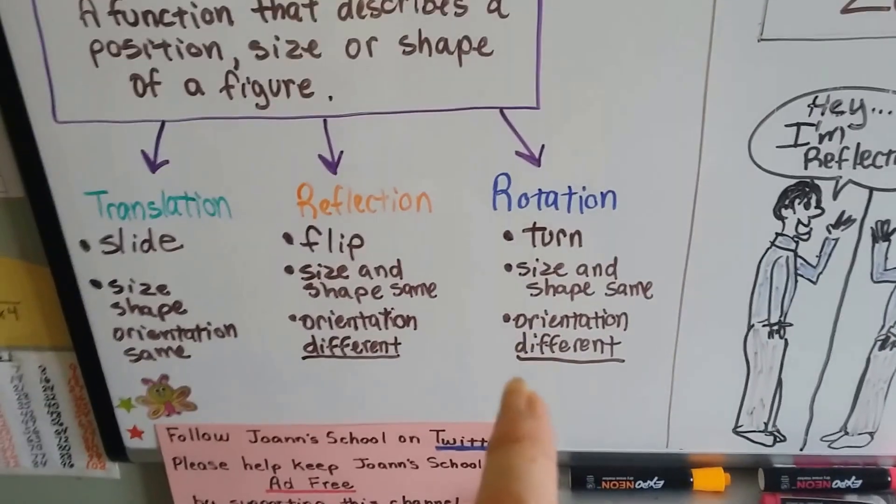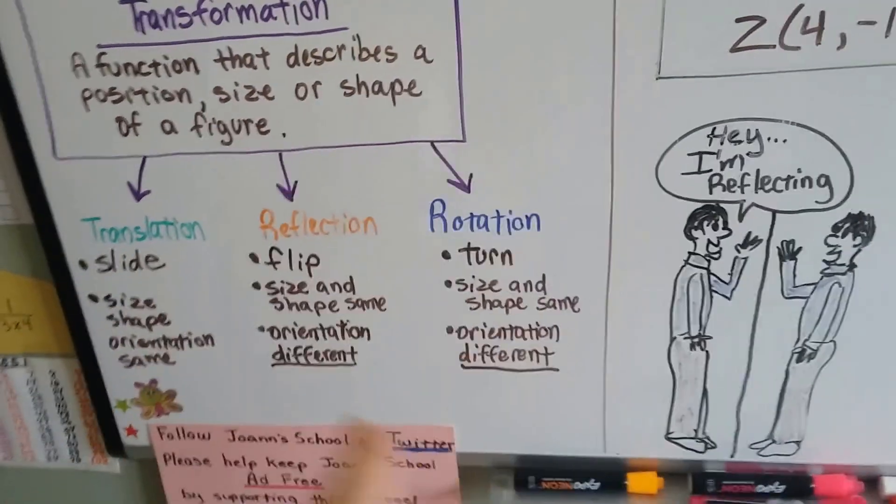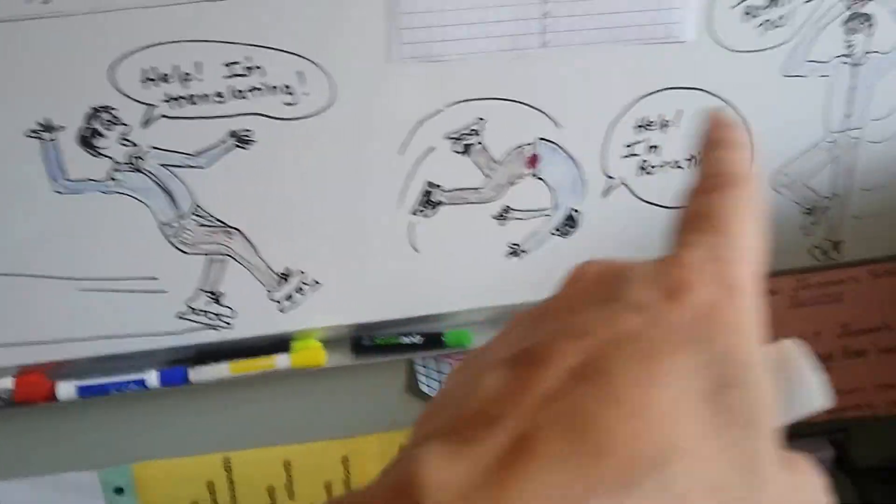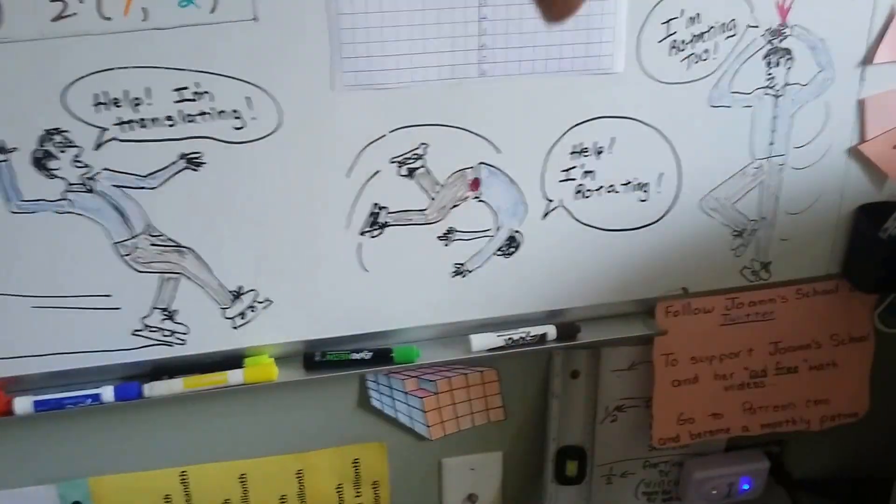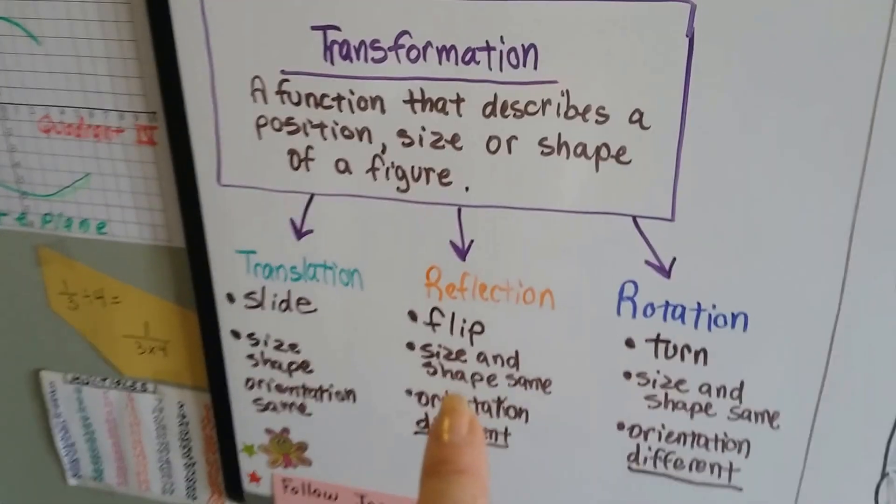And rotation is turning. The shape and size are going to stay the same, but the orientation is going to be different because they're going to spin. So those are the three types of transformations.